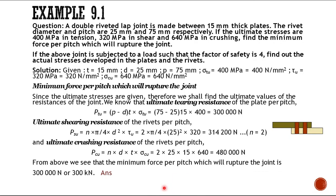Now we will go to the first numerical problem related to the design of a rivet joint. A double riveted lap joint is made between 15 mm thick plates. The rivet diameter and pitch are 25 mm and 75 mm respectively. The ultimate stresses are 400 MPa in tension, 320 MPa in shear, and 640 MPa in crushing. Find the minimum force per pitch which will rupture the joint.